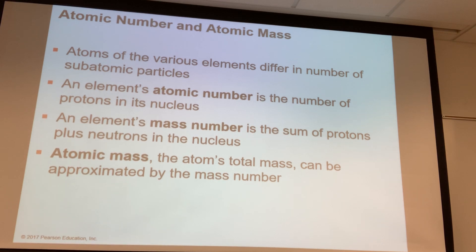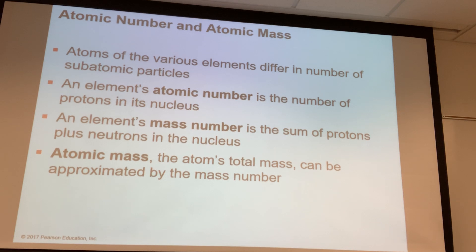Protons plus neutrons equals the mass number, which is 12 for carbon. The atomic number for carbon is 6. So what's the number of neutrons? You take the mass number and subtract the atomic number. Mass number for carbon is 12, atomic number is 6, so the number of neutrons is 6. And that's how you do it.